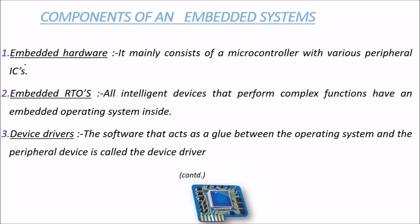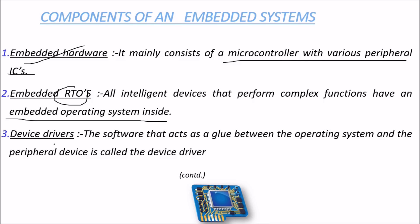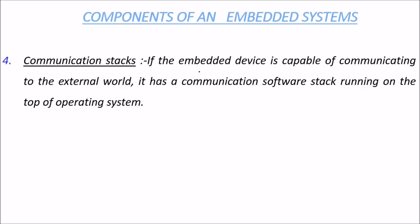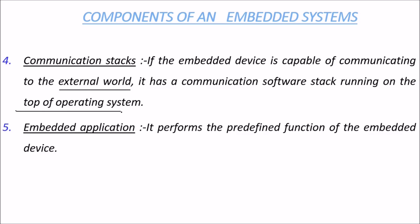Let us summarize the components of an embedded system. First, we have embedded hardware, which mainly consists of a microcontroller with various peripheral ICs. Then we have an embedded RTOS — a real-time operating system; intelligent devices that perform complex functions have an embedded operating system inside. Then there is the device driver, which is software that acts as a bridge between the OS and the peripheral device. Then come communication stacks — if the embedded device communicates with the external world, it must have a communication software stack running on top of the OS. Finally, the embedded application performs the predefined function of the embedded device.